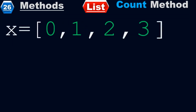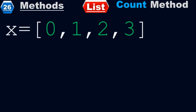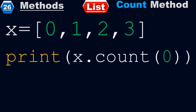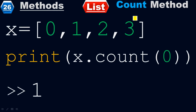Example number 26: x equals to 0, 1, 2, 3. We use the count function — print of x dot count of 0. I took the list with the elements 0, 1, 2, 3, and now I need to use the count function. I'm going to call print of x dot count of 0 to find out how many times 0 appears in the list.